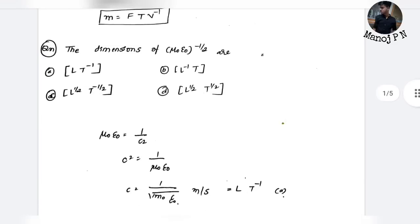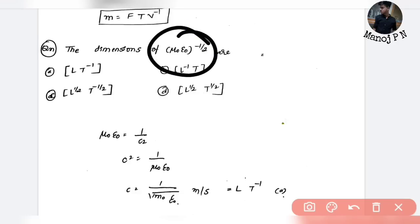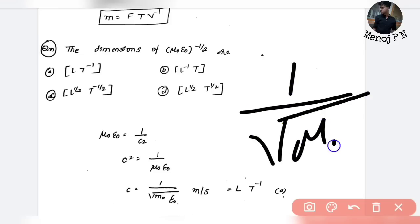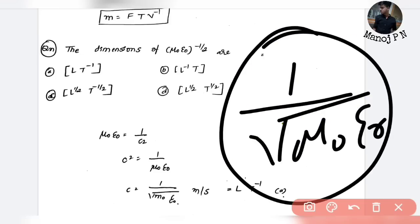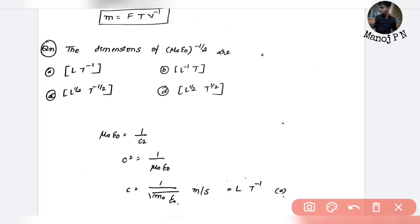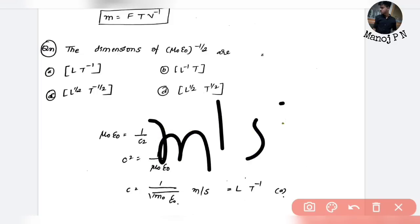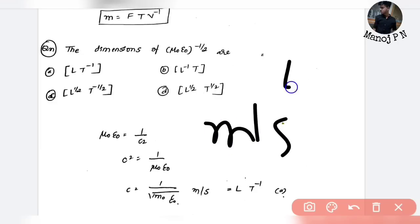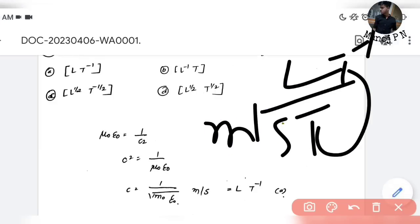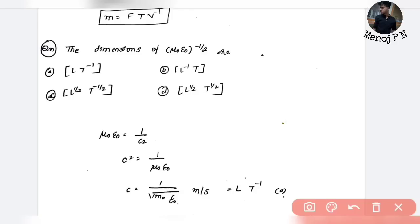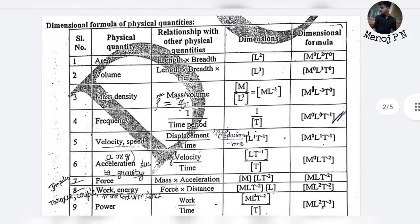Next: the dimensions of (μ₀ε₀)^(−1/2). This is of course the speed of light in vacuum. Speed of light in vacuum is measured in meter per second, so the dimensions are LT⁻¹. Option A is your answer — simple.